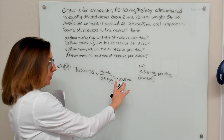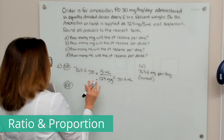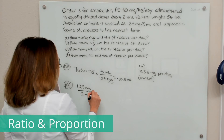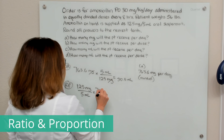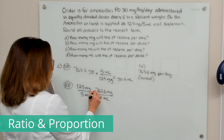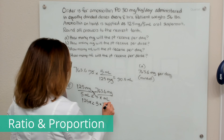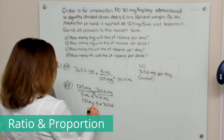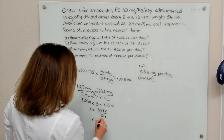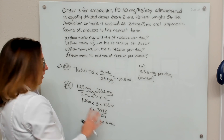We can also solve part C using ratio and proportion. Set up the known ratio as 125 milligrams per 5 mL on one side, and the daily dose of 763.6 milligrams per x mL on the other. Cross-multiplying gives 125x equals 5 times 763.6, so x equals 3818 divided by 125, which is 30.5 mL — the same answer as with dimensional analysis.